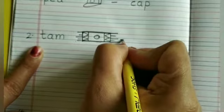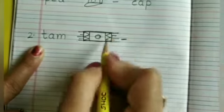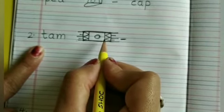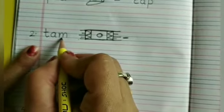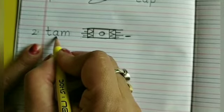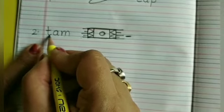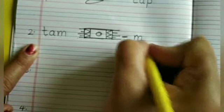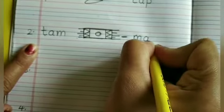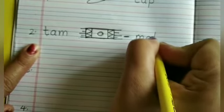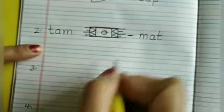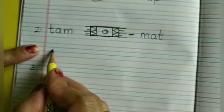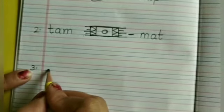Now put a dash. And mat. M, A, T. So this is the correct way of writing. Mat. Now do not write anything on this line. Just go to the next line.